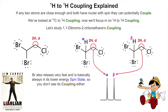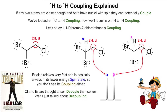Bromine also relaxes very fast and is basically always in its lower energy spin state, so you don't see its coupling either. When these hydrogens look over at the bromine, it's just in the lower energy spin state — only one combination. Chlorine and bromine are thought to be self-decouplers; they self-decouple.